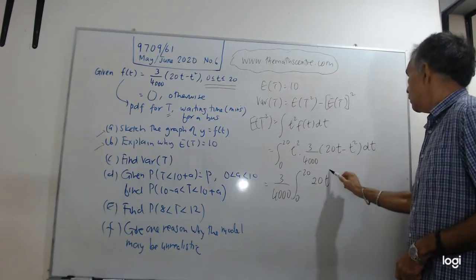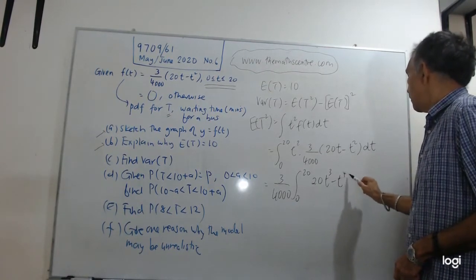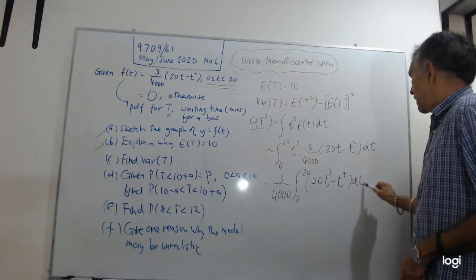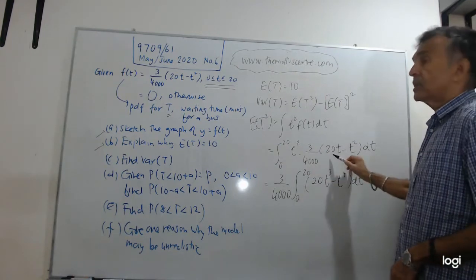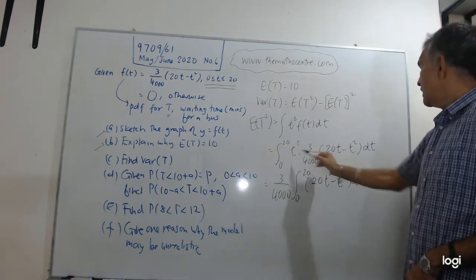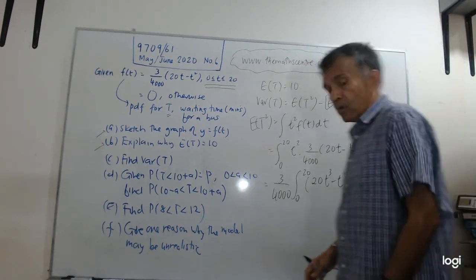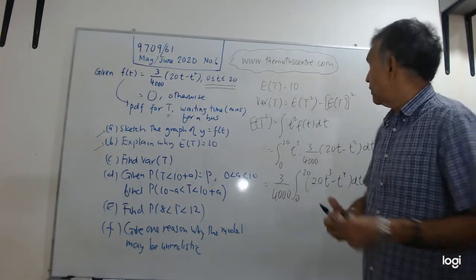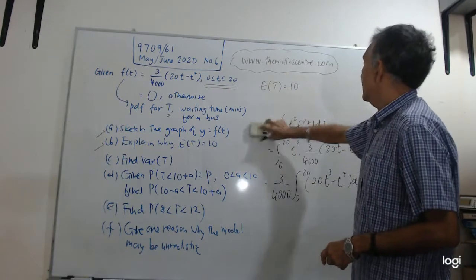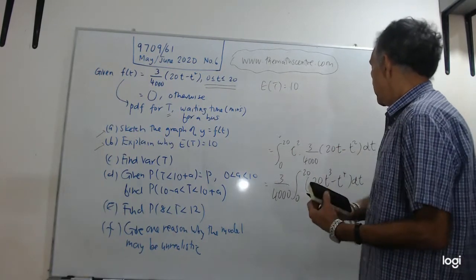What have I done? T squared times 20t is 20 t cubed, t squared times t squared is t to the power of four. Let me erase here and bring it up. I have three over four thousand, let's integrate. 20 t cubed will be five t to the power of four.